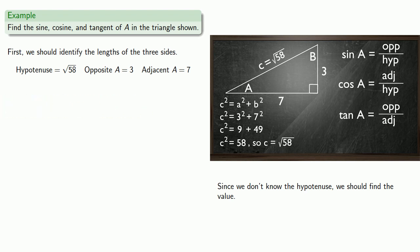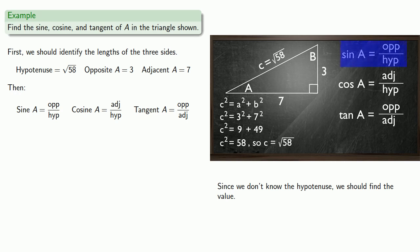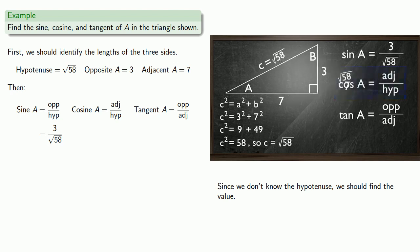Since we know our definitions of sine, cosine, and tangent, we can use those to find the sine, cosine, and tangent of a. The sine of a is the length of the opposite side over the length of the hypotenuse, so sine(a) = 3/√58. The cosine of a is the adjacent length over the hypotenuse, so cos(a) = 7/√58. And the tangent is the opposite over the adjacent, so tan(a) = 3/7.